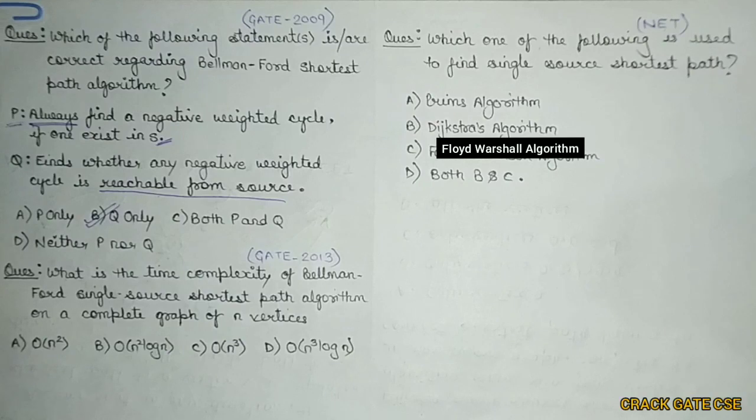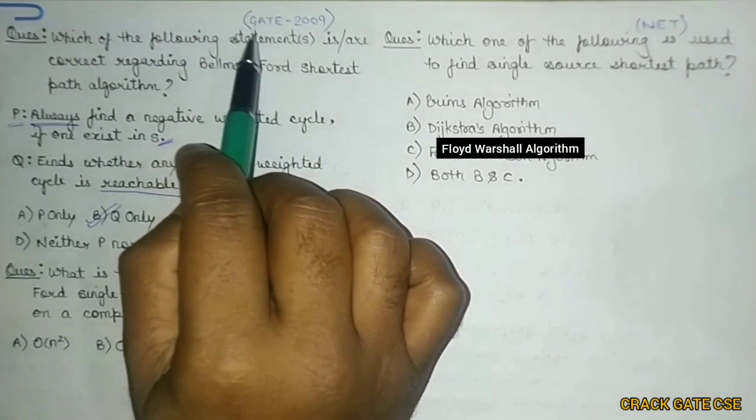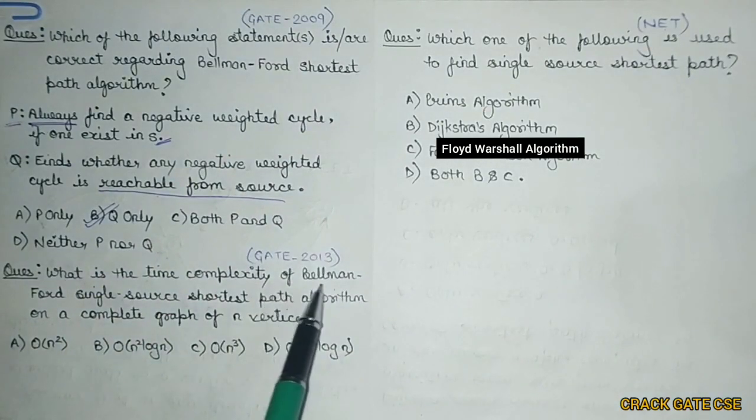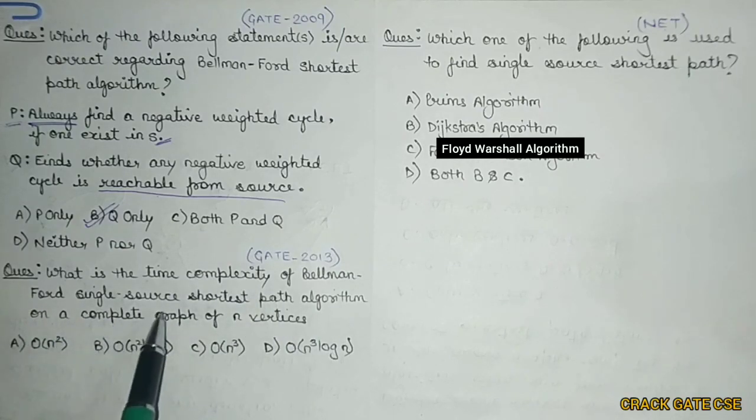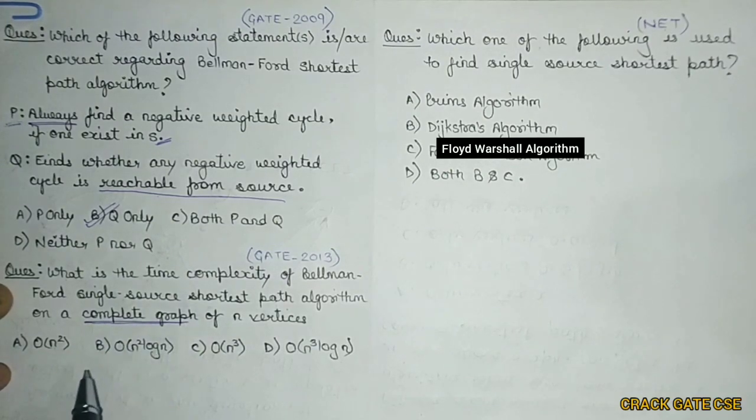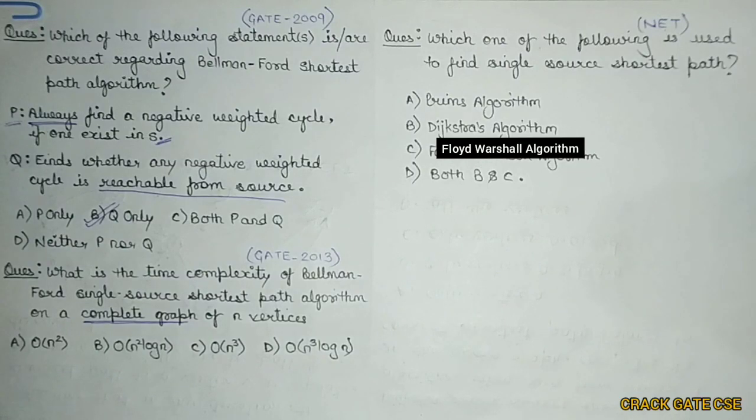Now, let's go with the second question. So this particular first question came in GATE 2009 and the second question came in GATE 2013. So what is it asking? What is the time complexity of Bellman-Ford single source shortest path algorithm on a complete graph? So this is an important word in the question that is complete graph.